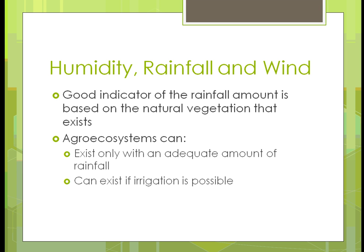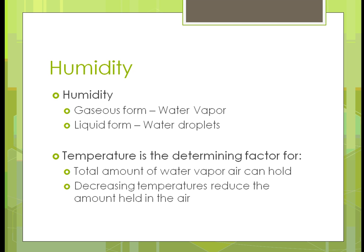A good indicator of rainfall amount is based on what type of natural vegetation you have, because vegetation will assist in providing more rainfall. To have an agri-ecosystem, you need an adequate amount of rainfall. If you don't have enough rain, plants won't grow or they'd have to adapt. In areas without adequate rainfall, you could possibly put in an irrigation system, though there are quite a few issues with that.